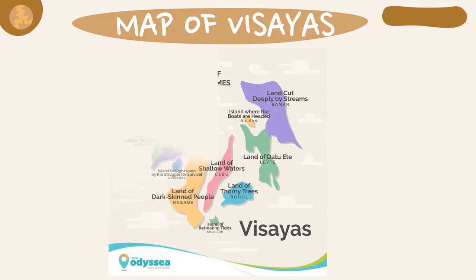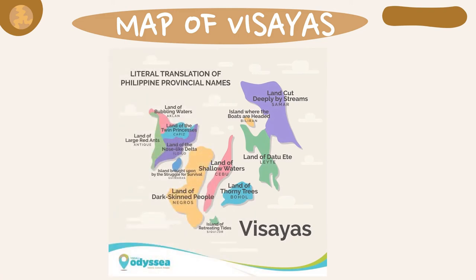Literal translations of Philippine provincial names in Visayas: Land Cut Deeply by Streams — Samar; Island Where the Boats Are Headed — Biliran; Land of Bubbling Waters — Aklan; Land of Twin Princesses — Capiz; Land of Large Red Ants — Antique; Land of the Nose-Like Delta — Iloilo; Island Wrought Upon by the Struggle for Survival — Guimaras; Land of Shallow Waters — Cebu; Land of Dark-Skinned People — Negros; Land of Demetrius — Bohol; Land of Dato Ete — Leyte; Island of Retreating Tides — Siquijor.